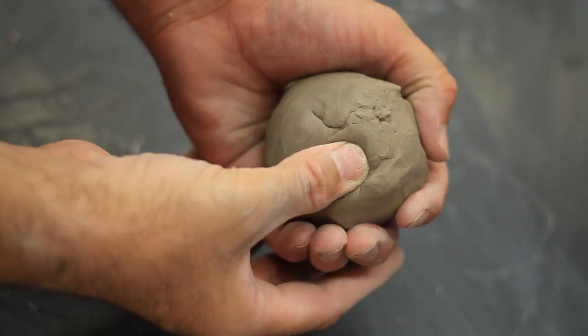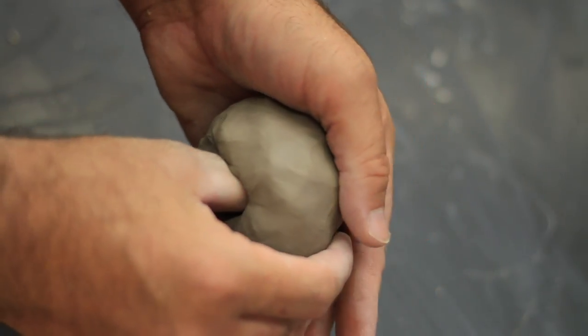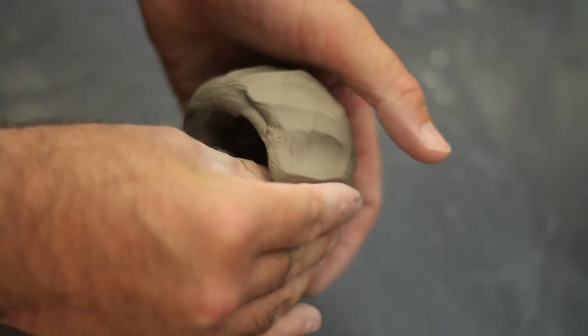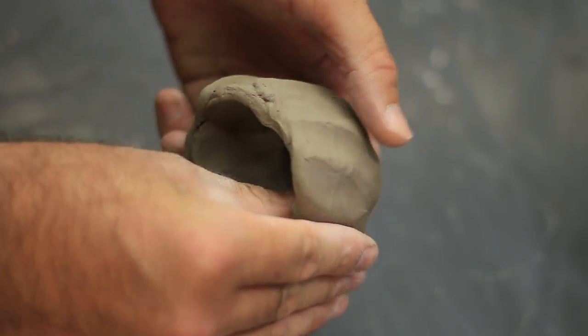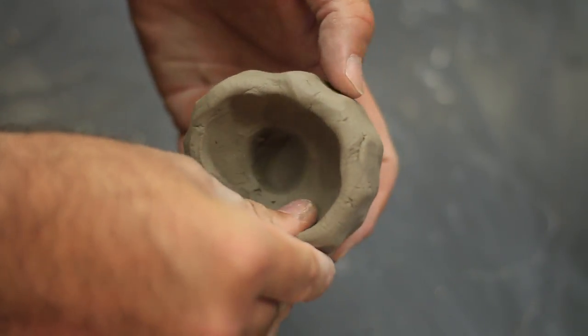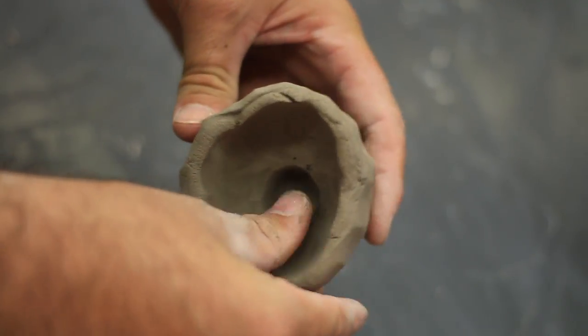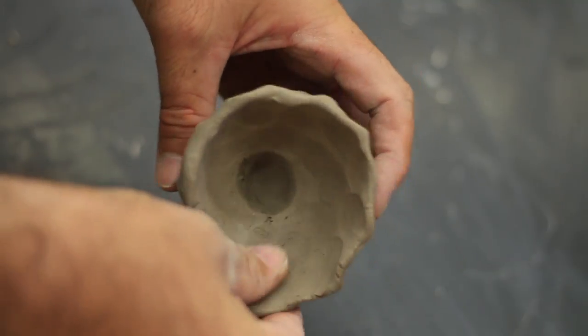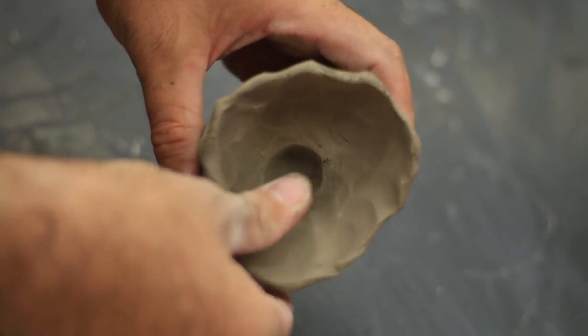The two most common problems when doing the pinch pot is, one, only pinching at the rim, which will cause the rim to be very thin and the bottom to be very thick, and could possibly cause an explosion. The second being, some people are too aggressive with their pinching, and then their pot has very thick and thin spots in it, making it harder to work with.